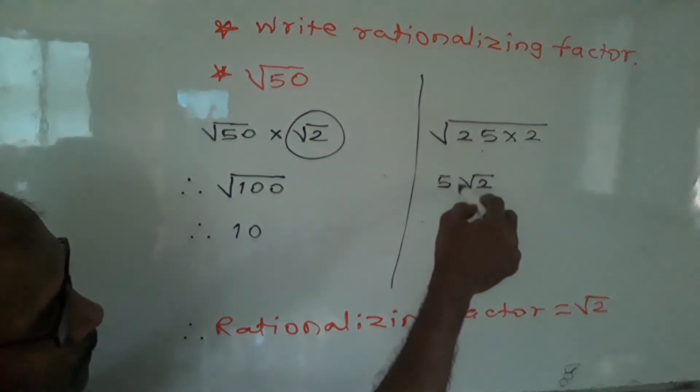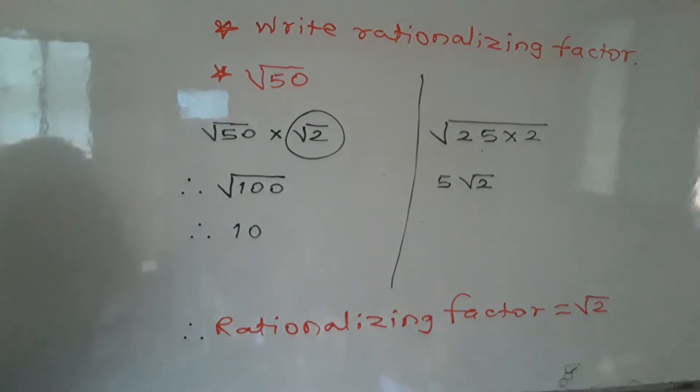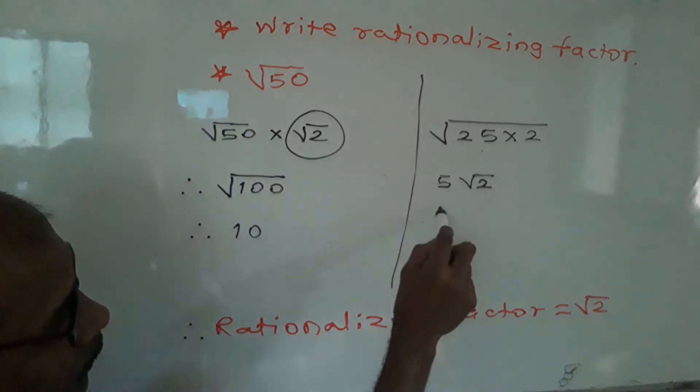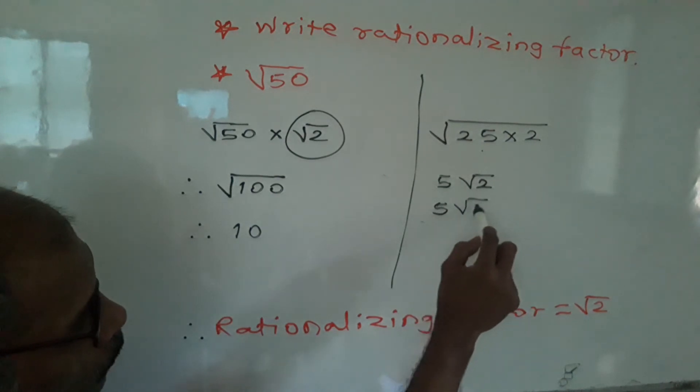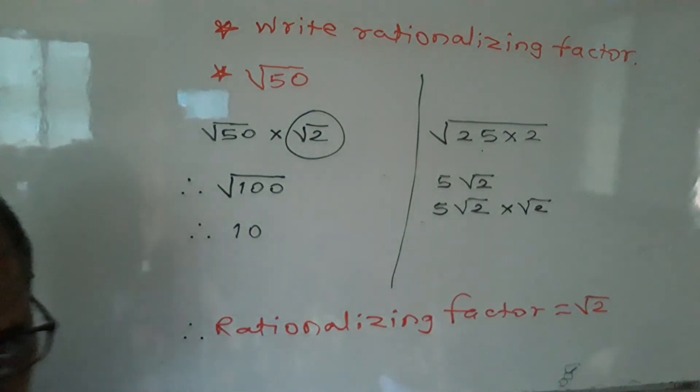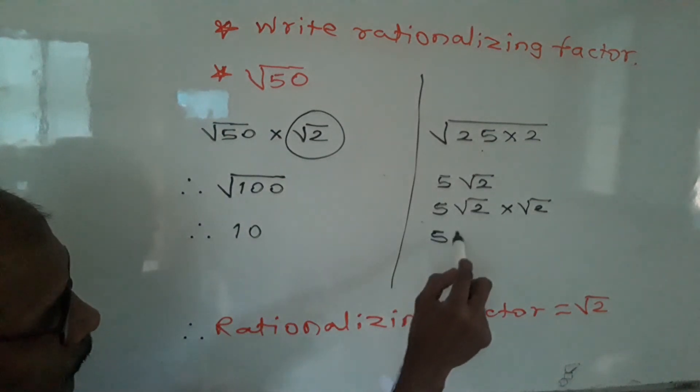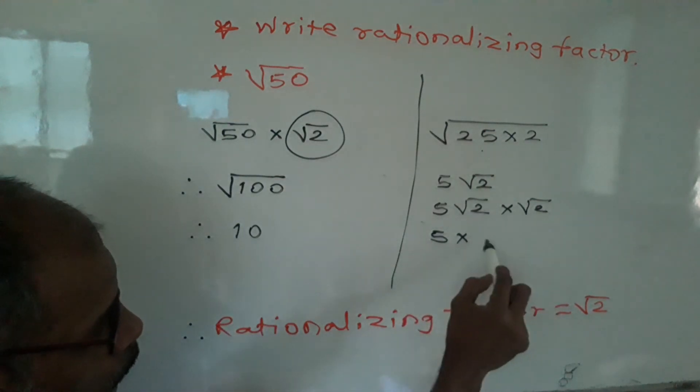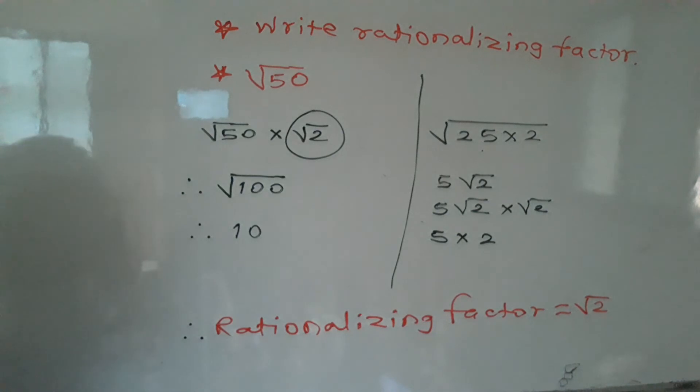Therefore we reduce this into rational number by multiplying to this square root of 2 by square root of 2. Therefore, 5 times square root of 2 times square root of 2. Therefore, again answer is 10.